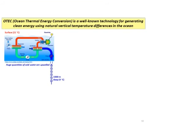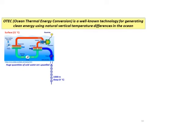So what's the world going to do? Maybe there's another approach, another idea - and that's what I'd like to tell you about this morning. As Jennifer mentioned, this involves OTEC, a technology I had quite a bit of experience with at Lockheed Martin. OTEC is a well-known technology for generating clean energy using natural vertical temperature differences in the ocean.